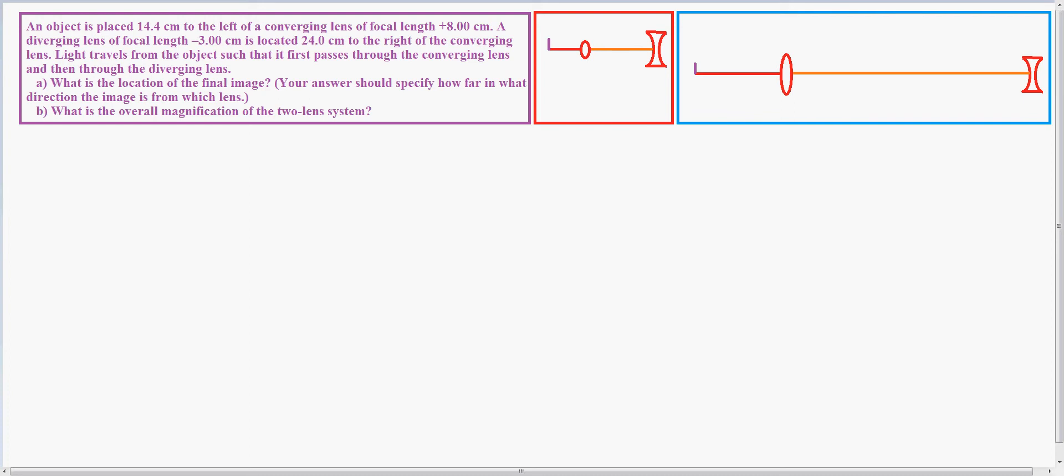In this video I'm trying to answer the question: an object is placed 14.4 centimeters to the left of a converging lens with a focal point of 8 centimeters. A diverging lens with a focal point of negative 3 centimeters is located 24 centimeters to the right of the converging lens.